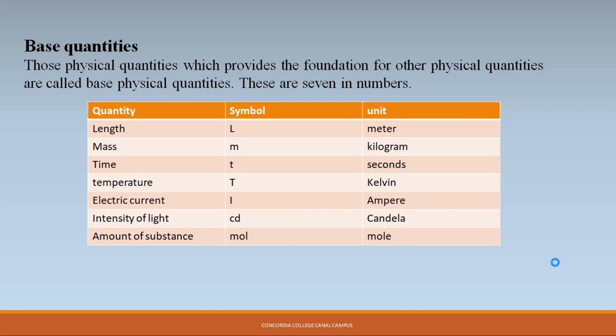The seven base quantities are: Length — symbol L, unit meter. Mass — symbol m, unit kilogram. Time — symbol t, unit second. Temperature — symbol T, unit Kelvin. Electric current — symbol I, unit ampere. Intensity of light — symbol cd, unit candela. Amount of substance — symbol mol, unit mole.